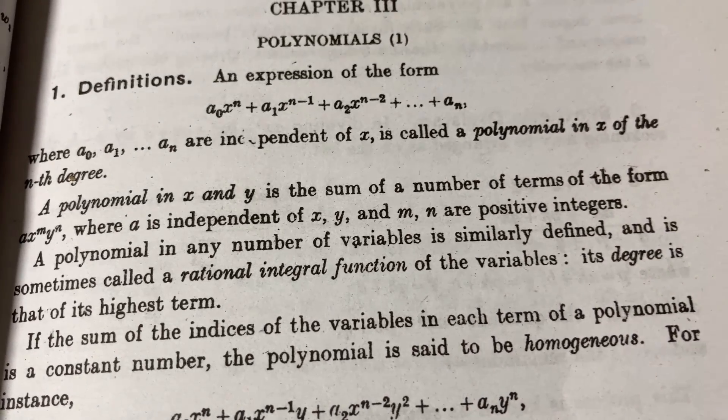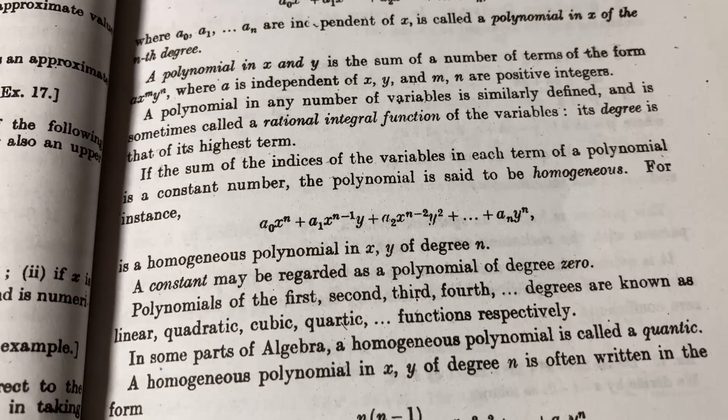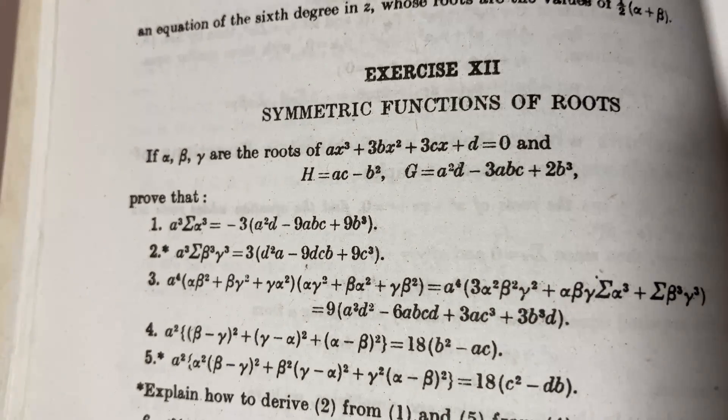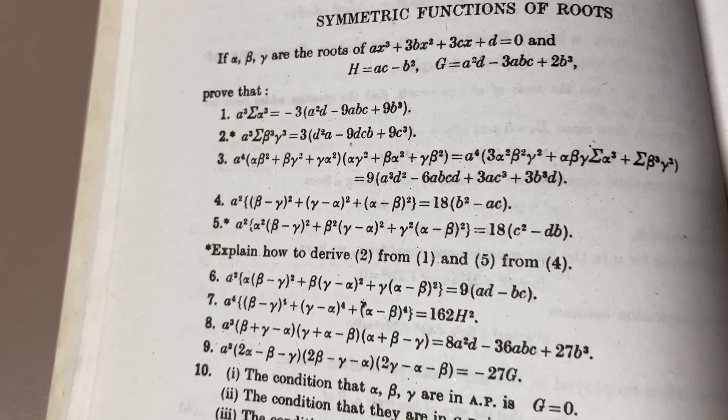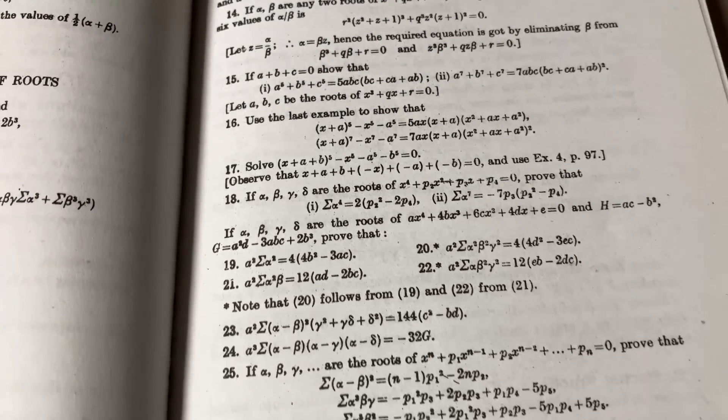A polynomial in x and y is the sum of a number of terms of the form where a is independent of x, y and m and n are positive integers. So it just goes through and just gives you a lot of mathematics right away. Here's an example of some of the exercises you can see that they can be pretty hardcore.